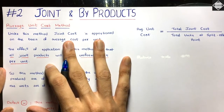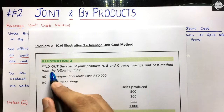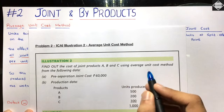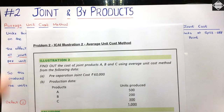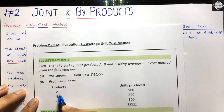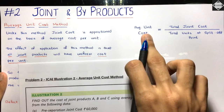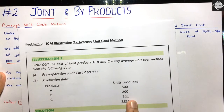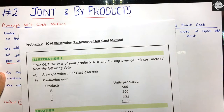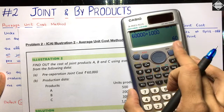Now let's solve a problem — Illustration 2 from the ICAI study material. Find the cost of joint products A, B, and C using the Average Unit Cost Method. Pre-separation joint cost is 60,000. Units produced: Product A = 500, Product B = 200, Product C = 300, total = 1,000 units. We calculate: average unit cost = 60,000 ÷ 1,000 = 60 per unit.